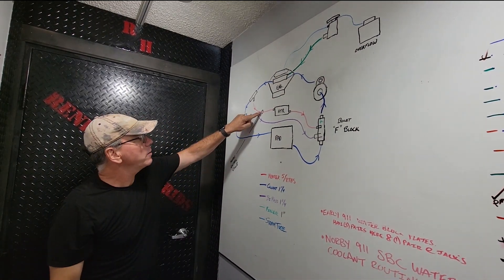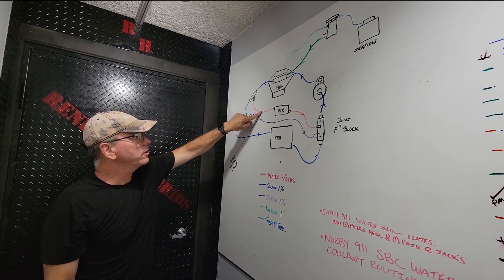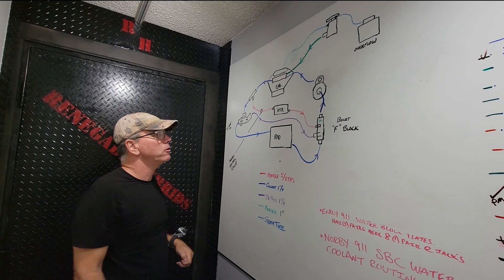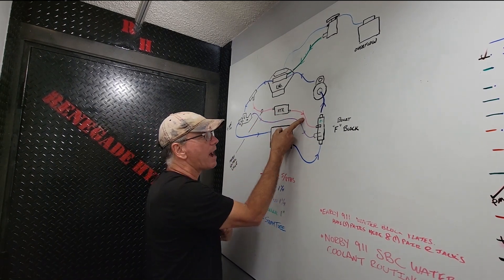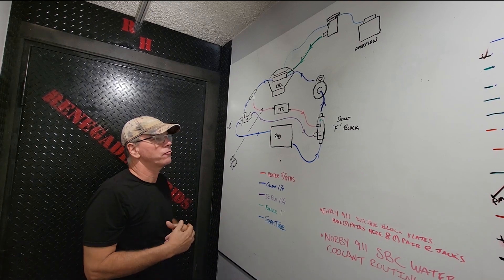The heater control valve goes right in here if you decide to use one, so that you can regulate your flow through your heater core. So anywhere in this portion of the loop feeding the heater core, you can even put it afterwards if you prefer. It really doesn't matter. That's why it's not necessarily shown on the drawing.